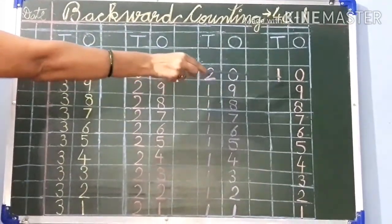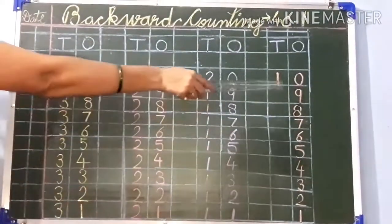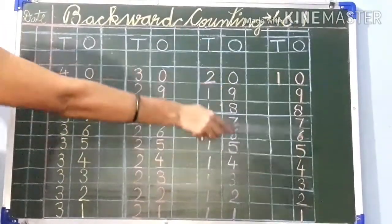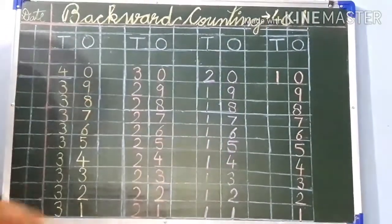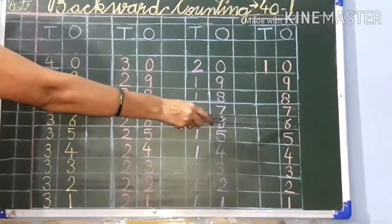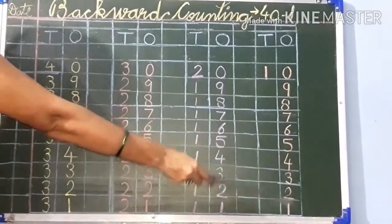Write 10. And you have to write 9 here in 1's column because this is single digit. So 9, 8, 7, 6, 5, 4, 3, 2, 1.